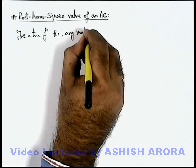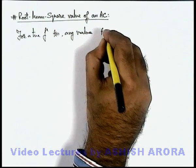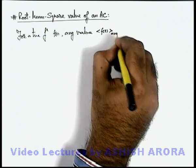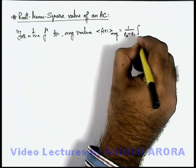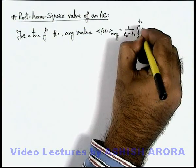average value can be calculated as f(t) average equals 1 by t2 minus t1, integration from t1 to t2, f(t) dt.